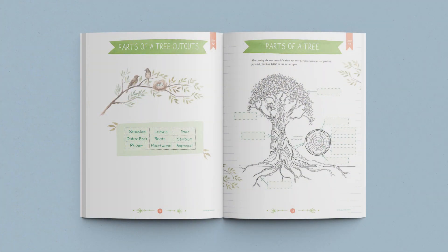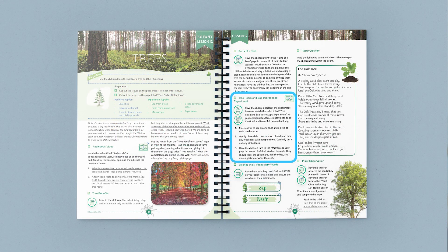Next, your students will complete the parts of a tree activity in their student journals, and then perform an experiment to discover the difference between sap and resin.